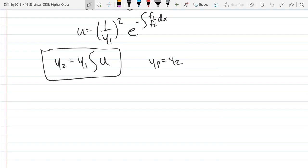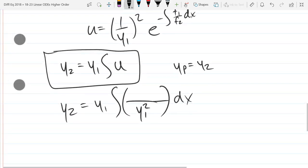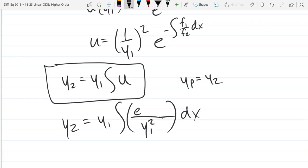So it will look like y2 equals y1 times the integral of, your denominator will be y1 squared, and the numerator is e to the negative integral f1 over f2. So it's an integral of another integral.